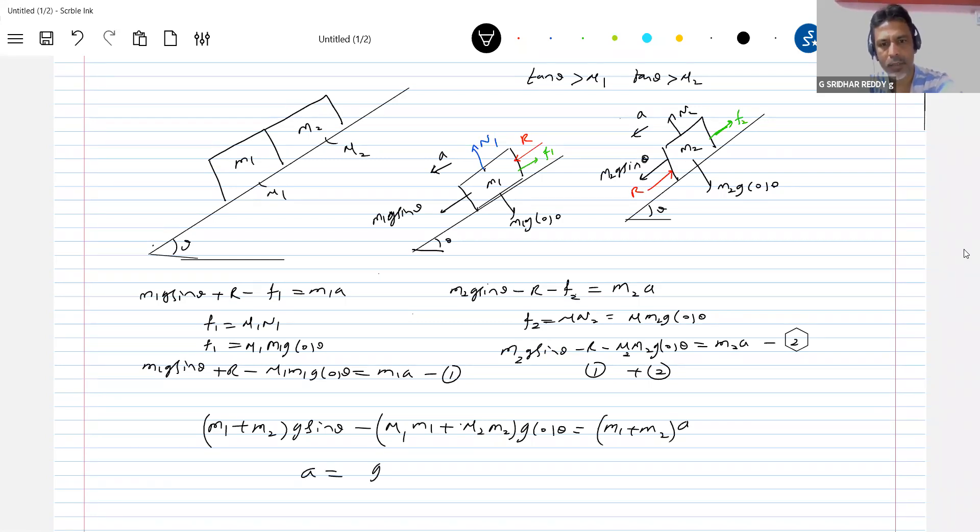This should be equal to g sin theta minus (mu1 m1 plus mu2 m2) by (m1 plus m2) g cos theta. If you want you can take g also outside, so we'll end up with this expression for acceleration.